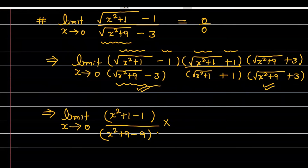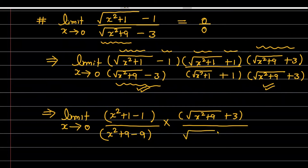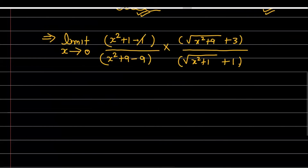अब जो data बचा हुआ है उसे check करें। Numerator में आपके पास square root of (x² + 1) plus 1 वाला term है। अब आप देख सकते हैं कि यहाँ पे 1 से 1 cancel हो रहा है, यहाँ पे 9 से 9 cancel हो रहा है, और इन दोनों cancellations के बाद x² को भी x² से cancel कर सकते हैं।